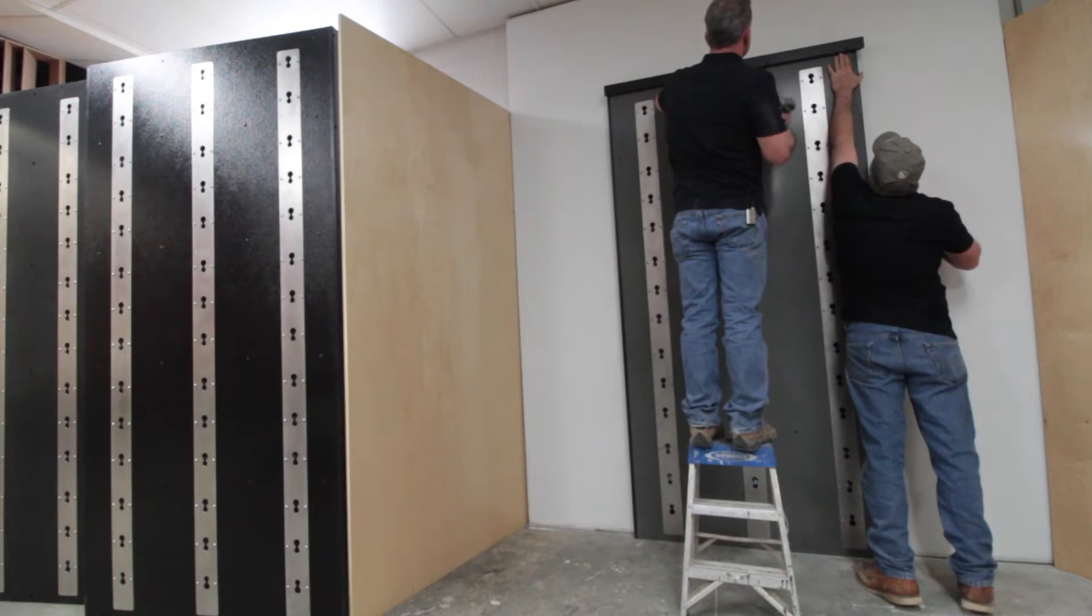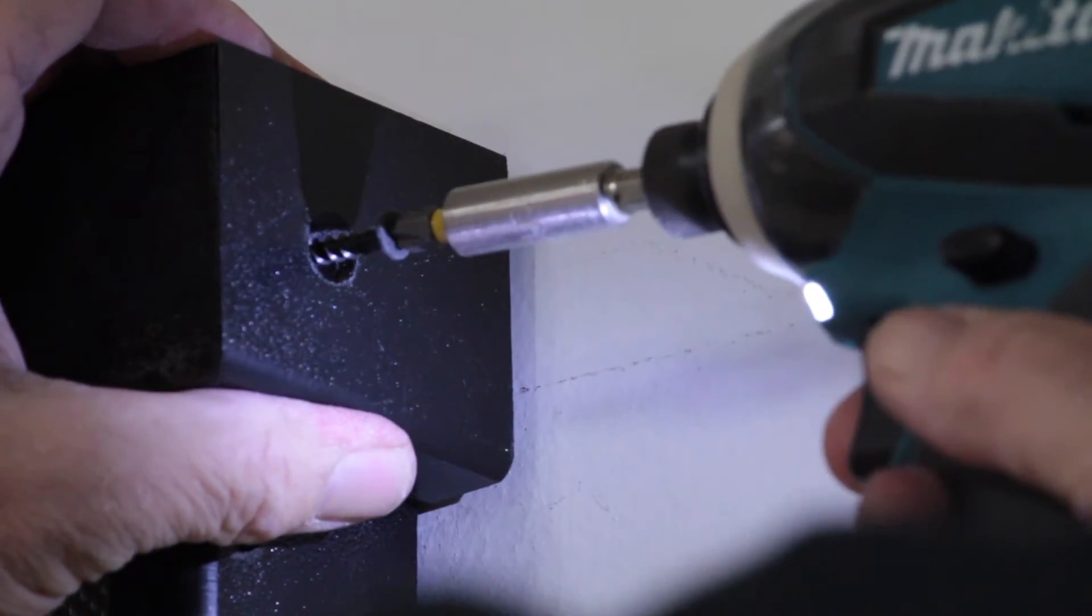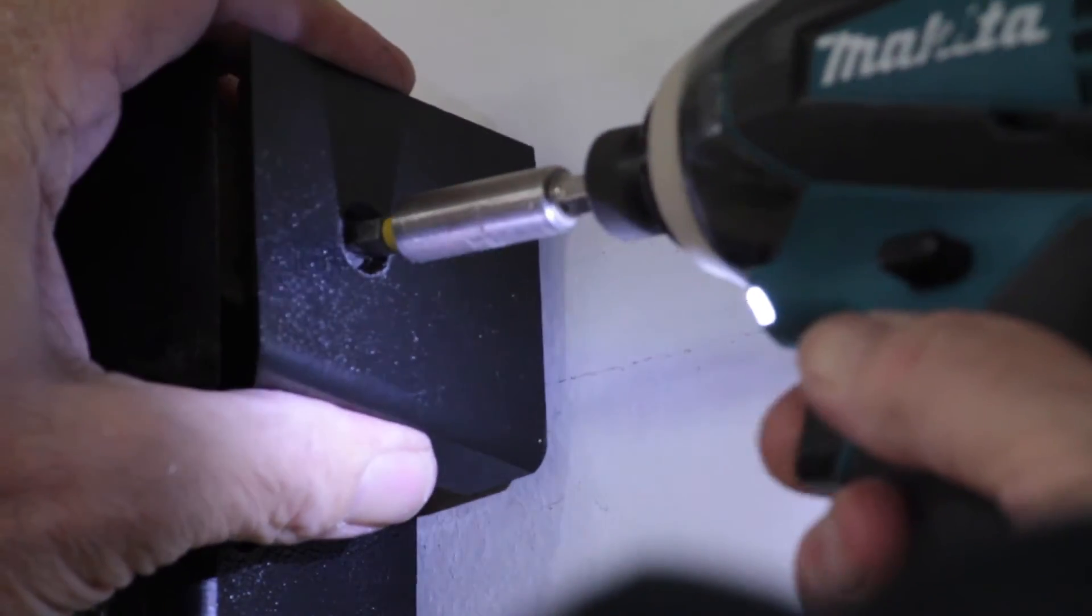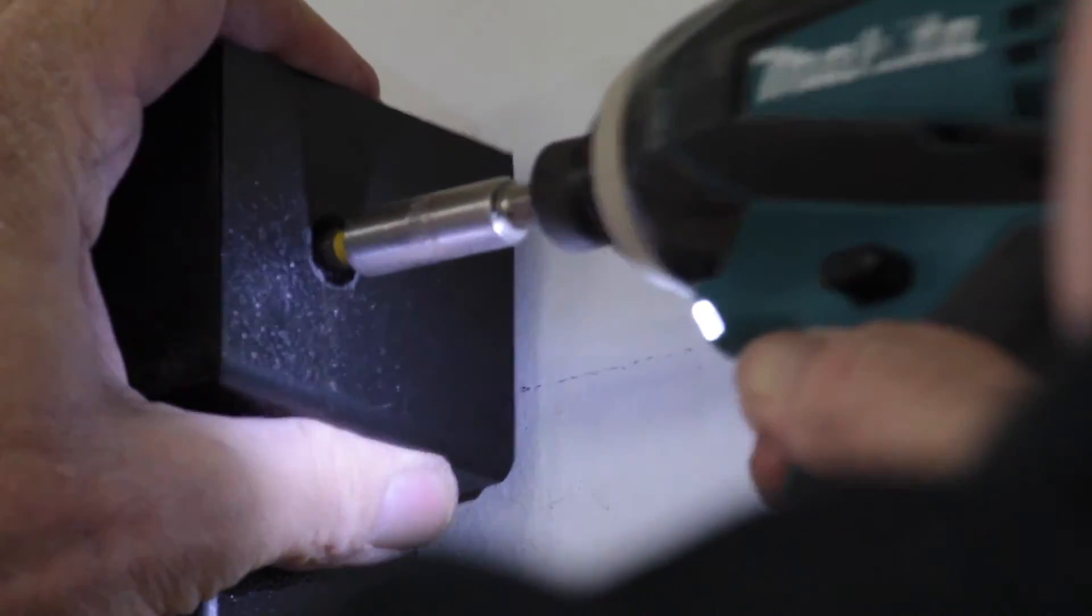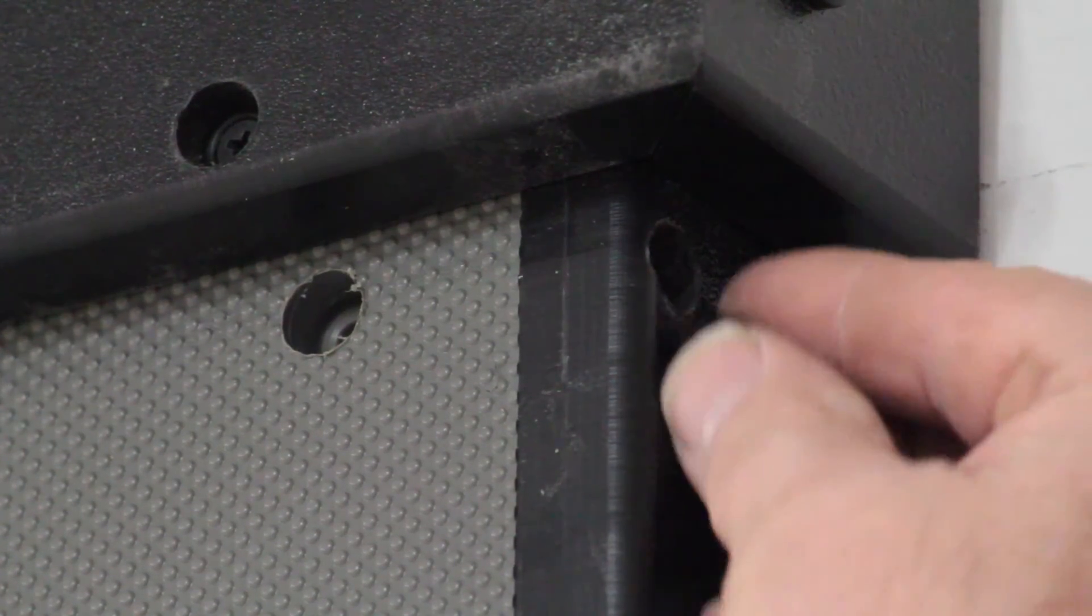After the side trim pieces are attached, you can install the top trim and corner trim pieces. Use the supplied buttons and a rubber or wooden mallet to cover the screw heads on the Izzawall.